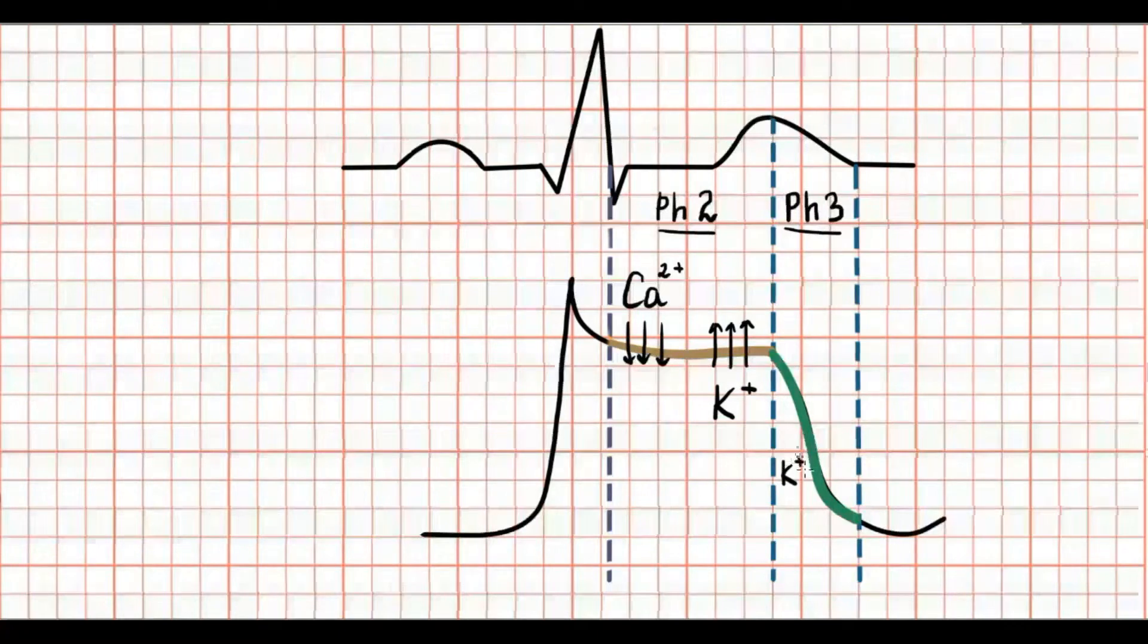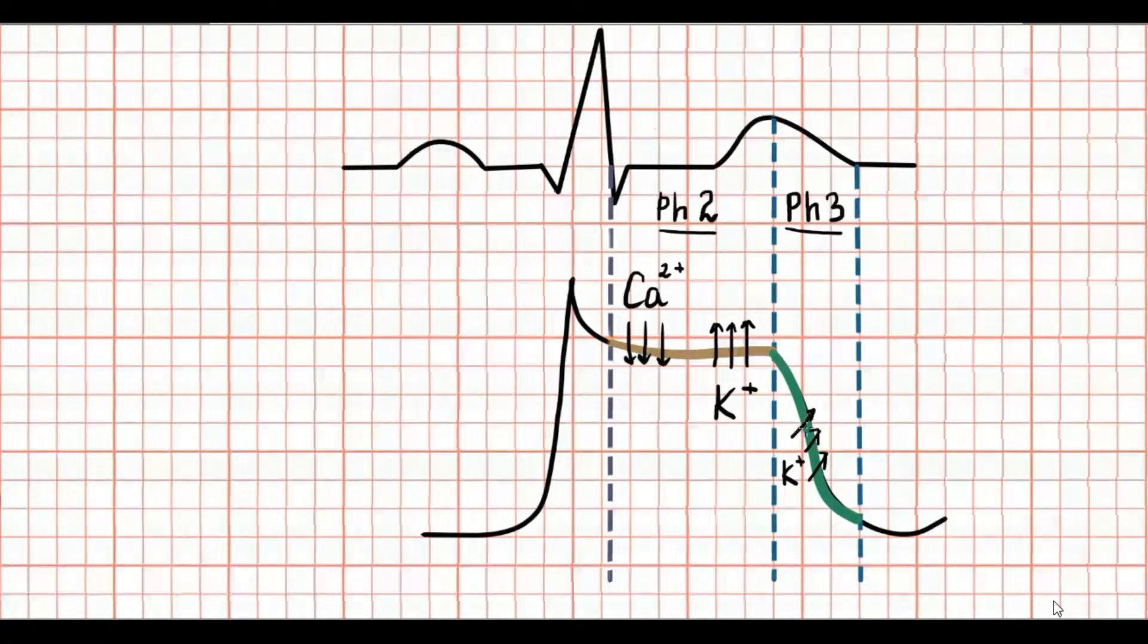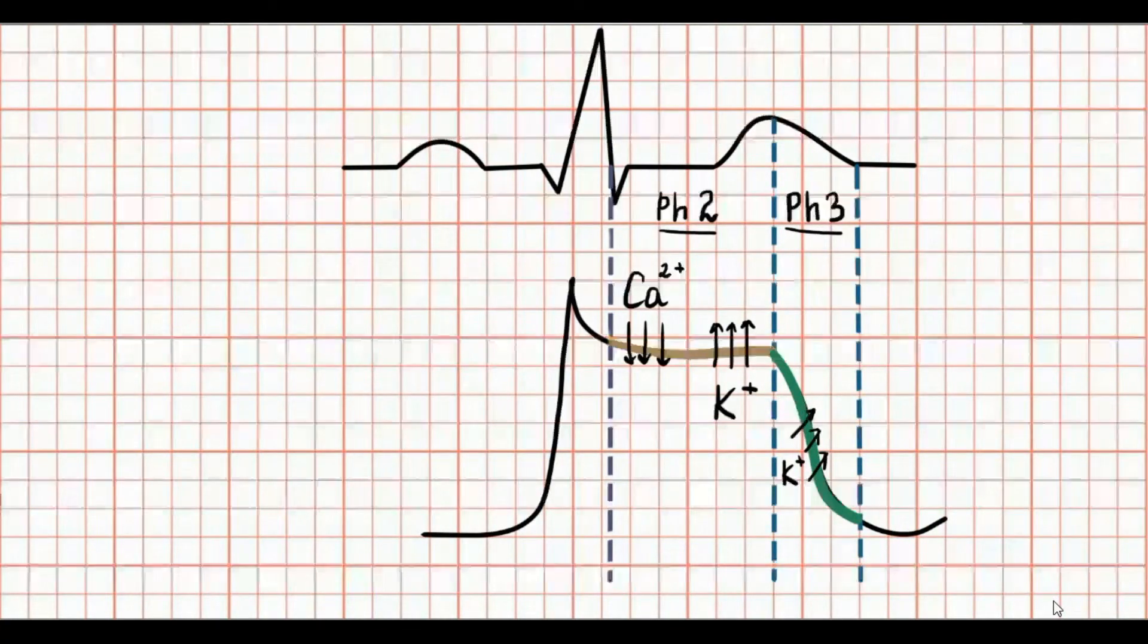During phase 3, the potassium channel currents go outside the cell and play the dominant role.